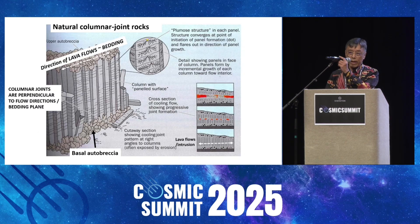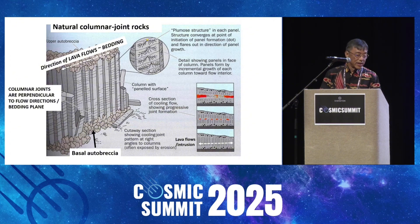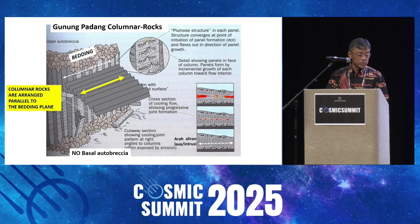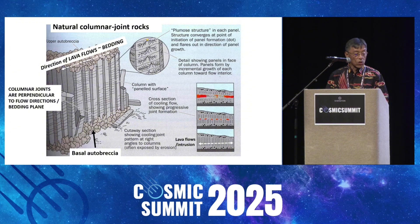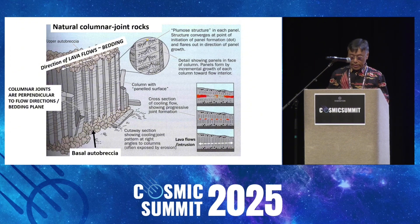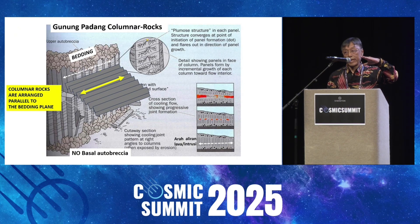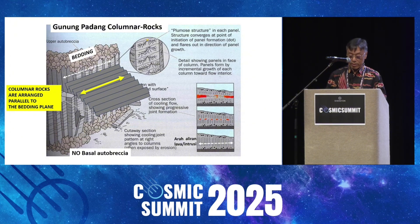First, let's talk about the surface data and the trenching data. We need to understand the columnar andesite rock used at Gunung Padang. In nature, columnar rock is always perpendicular to the bedding, but at Gunung Padang they are not — they are parallel to the surface. That is a clear sign of man-made construction, not nature.